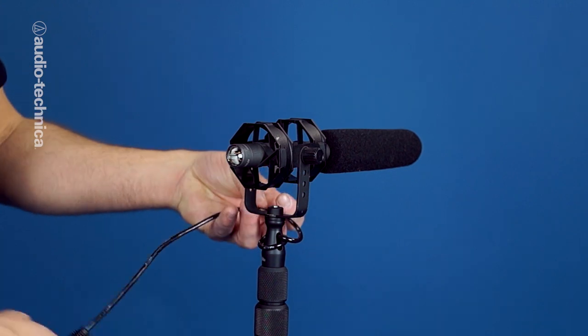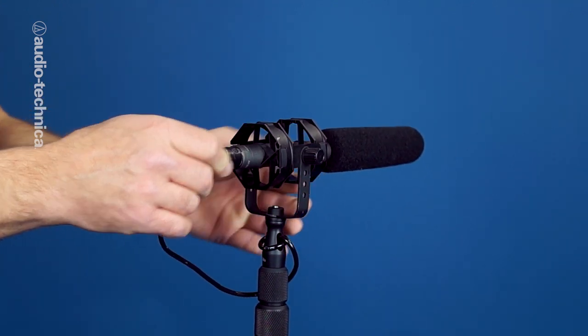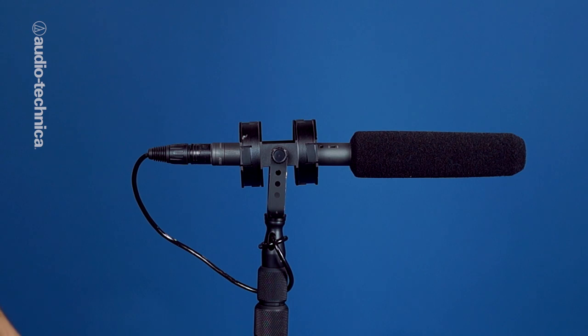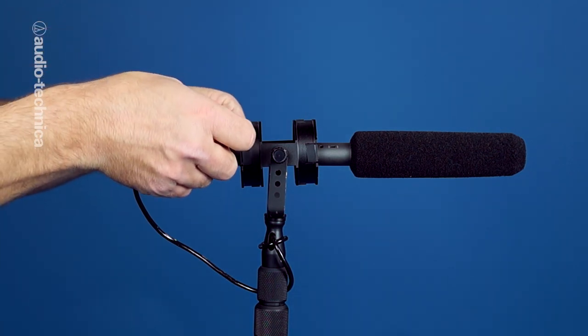After inserting the mic, connect the audio cable. If necessary, wrap the cable a half turn or a full turn around the pole so that excess cable slack won't knock against it.